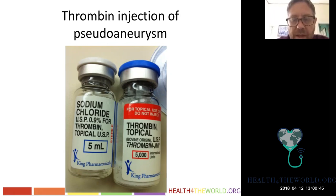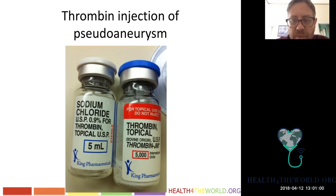Thrombin will immediately thrombose any vessel you inject it into — almost like a magic trick. You watch with ultrasound while you do it. About 0.2 cc's of thrombin injected into a pseudo-aneurysm will thrombose it very quickly.